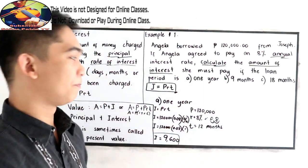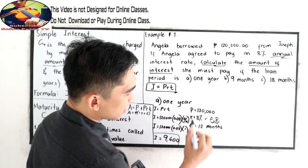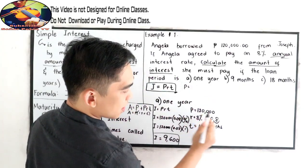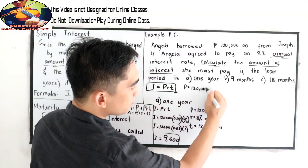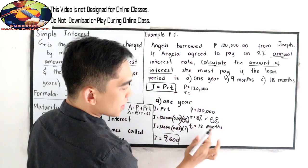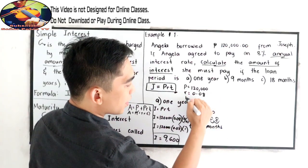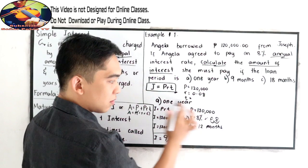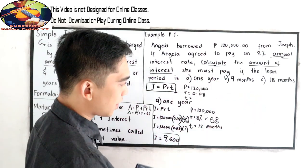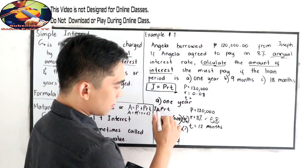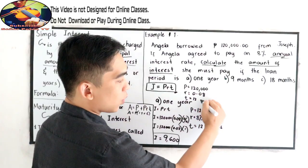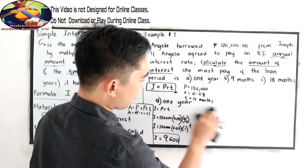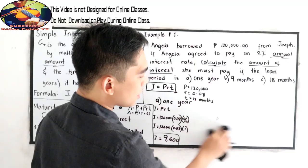Now let us try letter B. So we're going to use this one. So let me rewrite. Our P is 120,000. Our R is 0.08. And our time depends on our given or the problem asked. So in letter A, we use 12 months because that is 1 year. I'm going to erase this now.